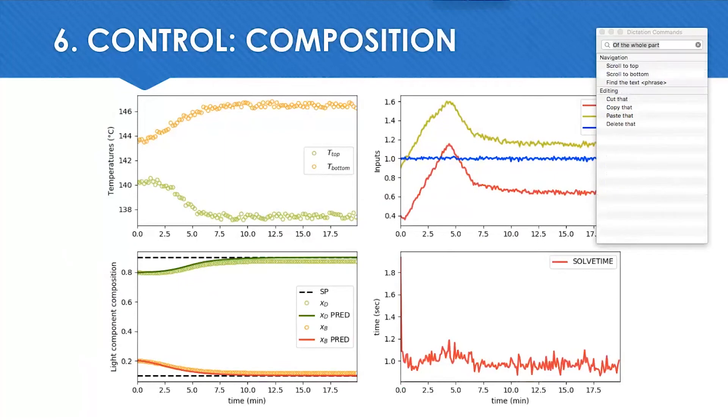Now if we try to control the composition, the MPC was able to drive the system to the desired setpoint, but in the end we got a little offset due to model differences. This can be handled by inserting a bias when a measure is available or by running the MHE alongside the MPC. The average time to solve each cycle was about one second as well.